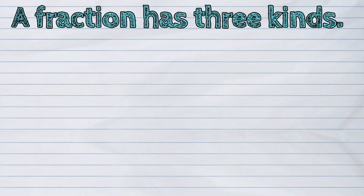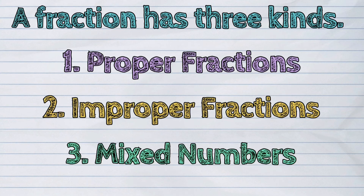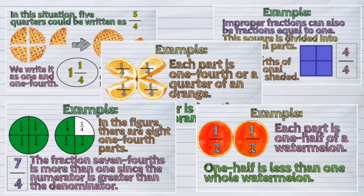And those were the three kinds of fraction: the proper fractions, the improper fractions, and the mixed numbers. A proper fraction is a fraction whose numerator is less than its denominator. An improper fraction is a fraction whose numerator is greater than or equal to its denominator. And a mixed number is a fraction formed by a whole number and a proper fraction.